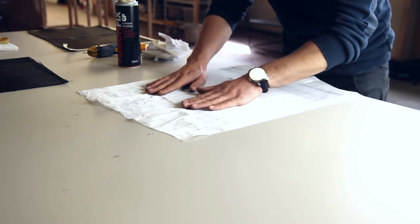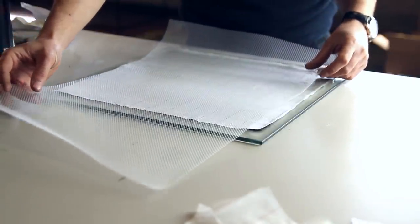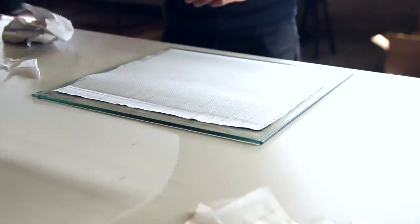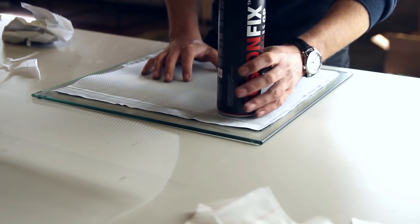The traditional technique would be using a peel ply followed by the infusion mesh and then the vacuum bag as a final layer to have a good resin infusion.